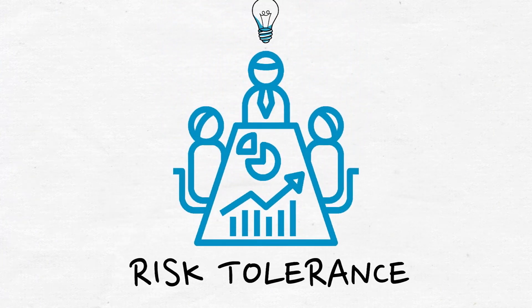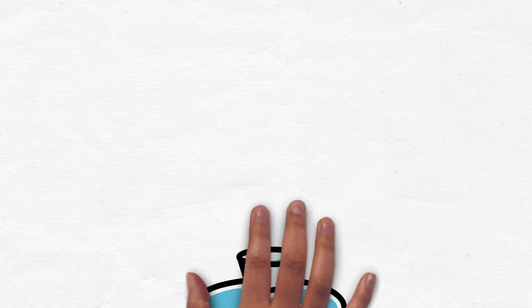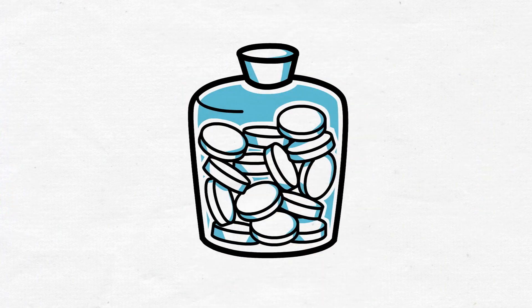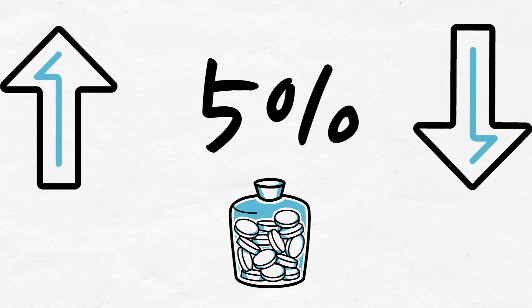Can they tolerate an asset they own to swing up or down 5% in a given day? Or do they prefer investments with a lower volatility that can feel safer?